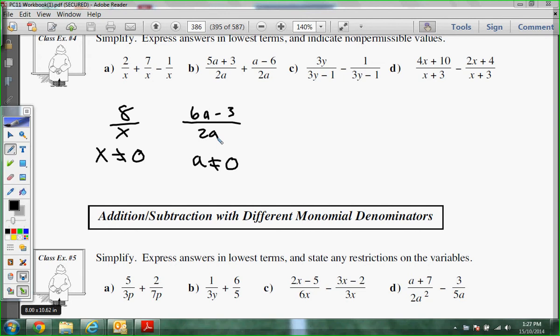Emma, what's my non-permissible for c? Yep, 1 third. Good. She adds the 1, divides the 3, 1 third. We have a common denominator. Now look at this. 3y minus 1 over 3y minus 1. What's that equal? 1. It's the same thing over the same thing.